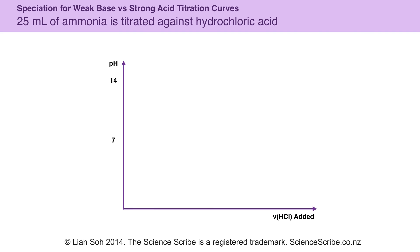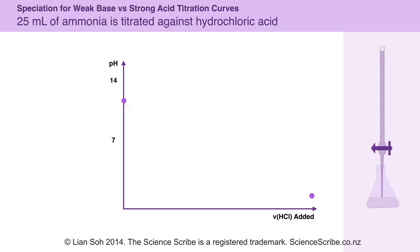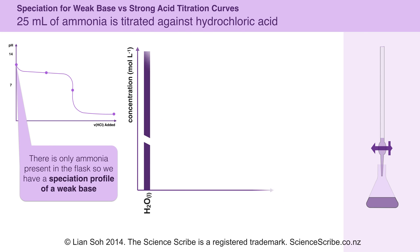In our weak base versus strong acid titration curve, I'm going to use 25 mL of ammonia as my example of a weak base, and hydrochloric acid as my example of the strong acid. Starting with ammonia in the flask, the contents is quite alkaline, so the pH should be above 7. The burette will be filled with hydrochloric acid, so as we add it to the flask, the flask becomes increasingly acidic and the pH at the end should be really low. We're still going to discuss those four very important points in our titration curve.